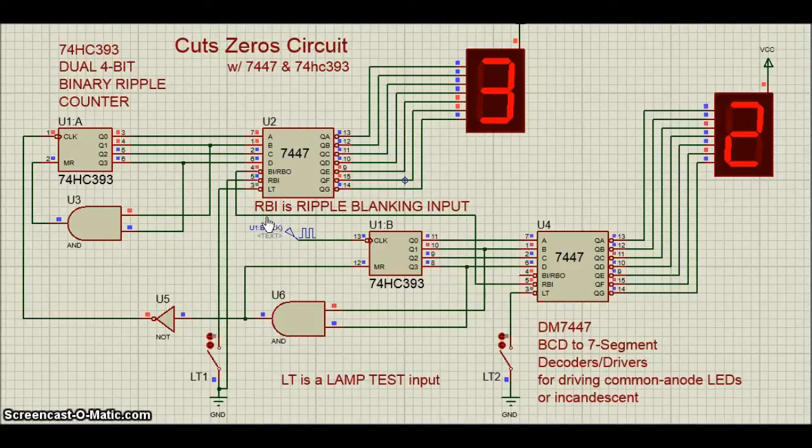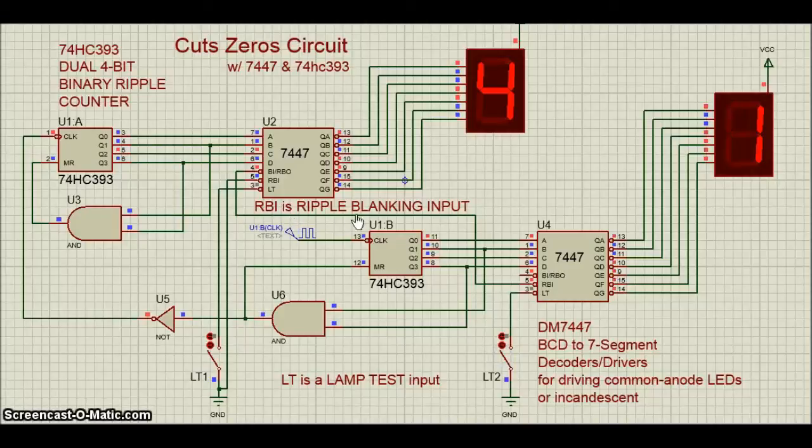LT is Lamp Test input. When at logic level 0, every output is active, so you can check if a segment or output is broken, or verify that none of the segments are burned out. RBI is Ripple Blanking Input.